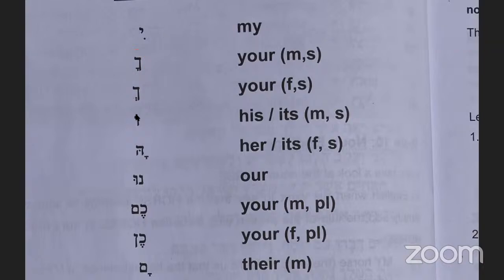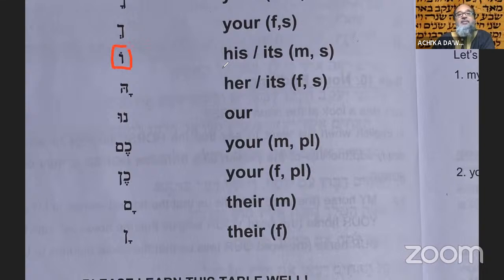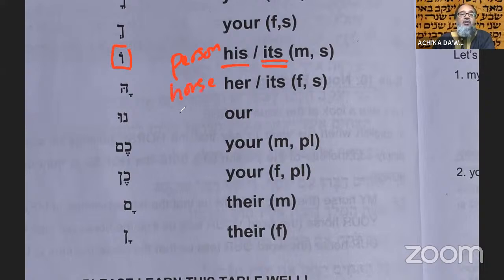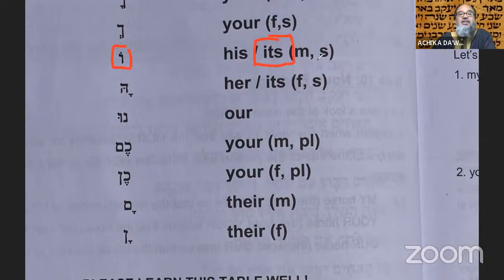For example, shimka means 'your name' addressing a male, because shem is 'name' and ka is masculine. For a female it would be shimakh. Anytime you see the final kaf with a kamats that's masculine; the two dots are the feminine marker. Over here the vav with a dot on top represents 'his' or 'its' — because 'it' referring to a masculine noun like a horse or a bull is also masculine.